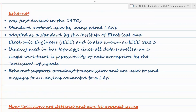So what exactly is Ethernet? We've all heard about Ethernet — when we connect our system to the internet using wires, we say connection via Ethernet, by cable. Ethernet was first devised in the 1970s, and it is basically a standard protocol used by many wired LANs. Whenever you have to create a connection using cables for a local area network, this is the standard protocol followed.